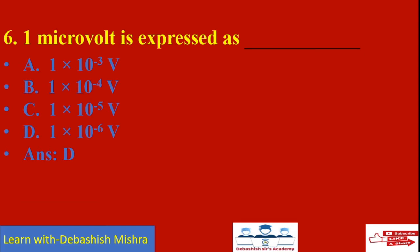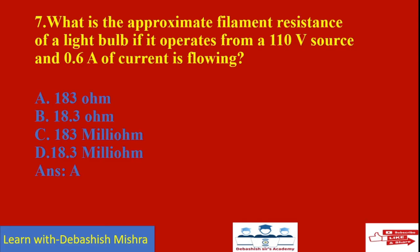One micro volt is expressed as: micro means 10 to the power minus 6, so the answer is D: 1 × 10⁻⁶ volt.